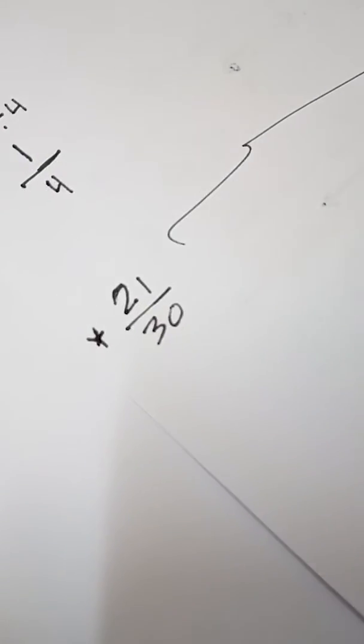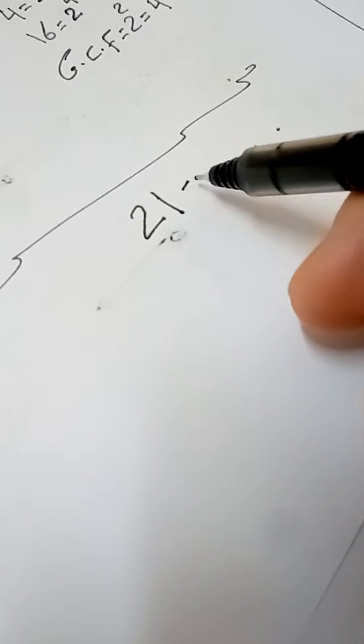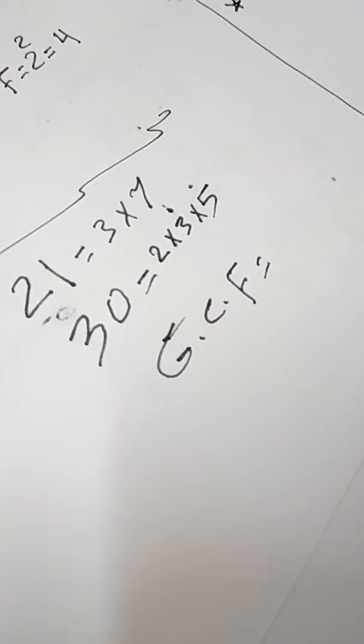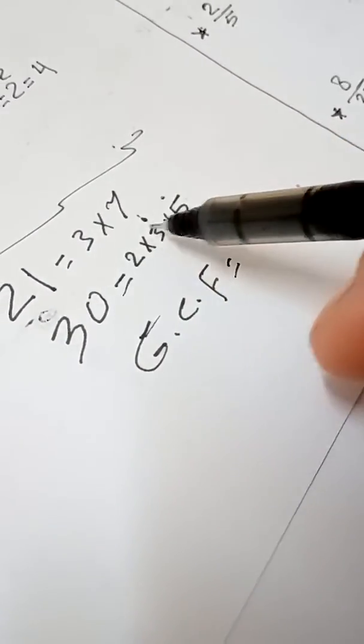In this example we have 21 over 30. Take 21 — 21 equals 3 times 7. Then take 30 — 30 equals 5 times 6, and 6 equals 2 times 3, so 30 equals 2 times 3 times 5. Now find the GCF: the common factor is 3.